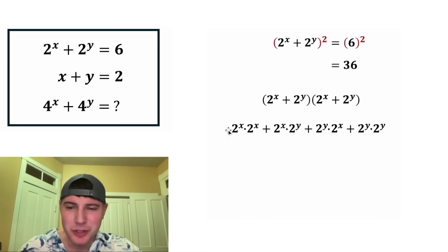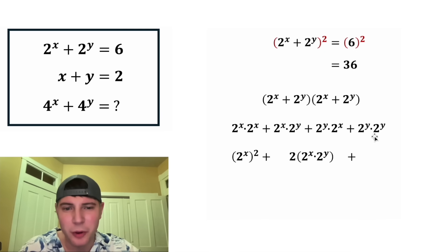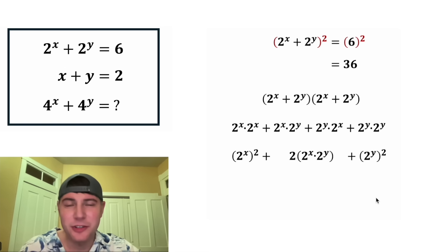For the first term, 2 to the x times 2 to the x, that's 2 to the x squared. For the middle two terms, these are the exact same thing, so we can say we have two of them: 2 times 2 to the x times 2 to the y. And then for the last one, 2 to the y times 2 to the y, that is 2 to the y squared.